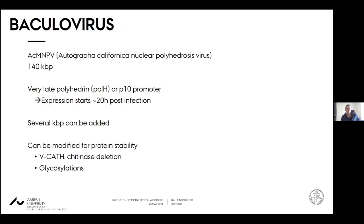The Baculovirus system we are currently using is mostly derived from Baculovirus autographa californica. It's a virus of around 140 kilobase pairs. We use the very late polyhedron promoter or the P10 promoter to express proteins. These are expressed in the very late stage of the virus cycle, not needed in a laboratory environment but needed for the virus to spread in the native environment. One can use these promoters to express high amounts of proteins at a very late stage of the infection cycle.